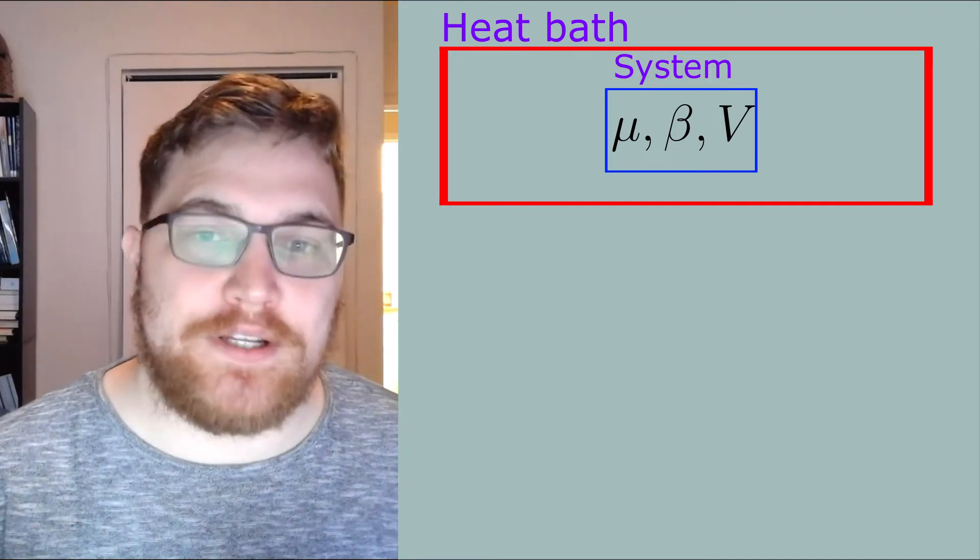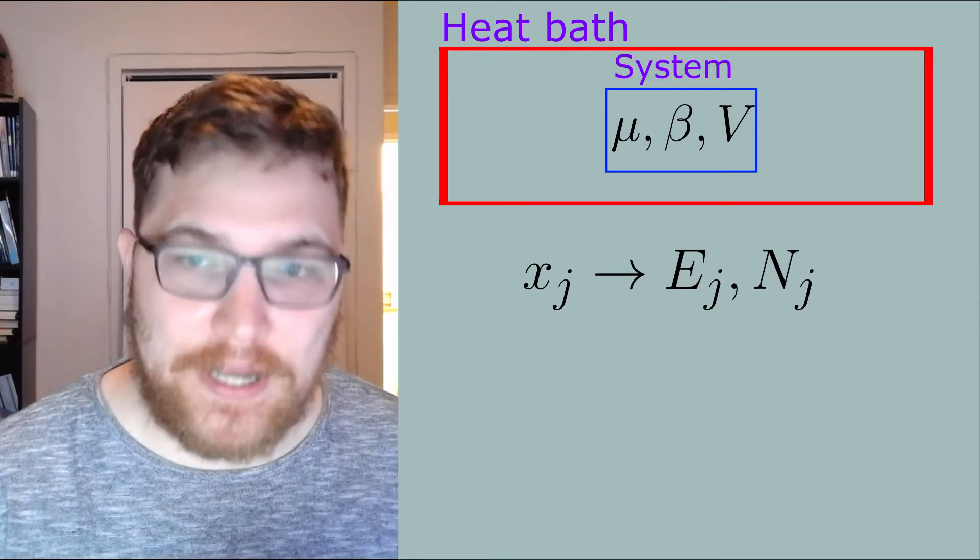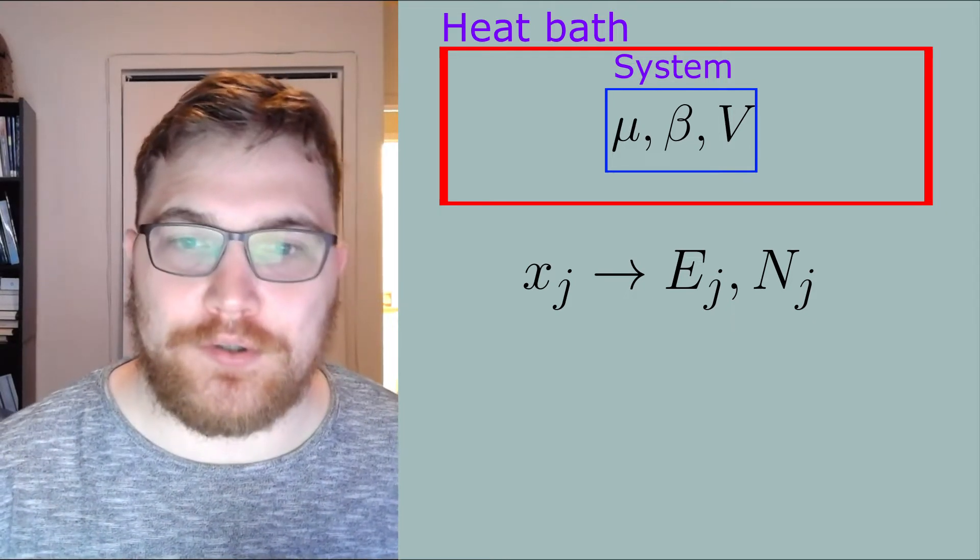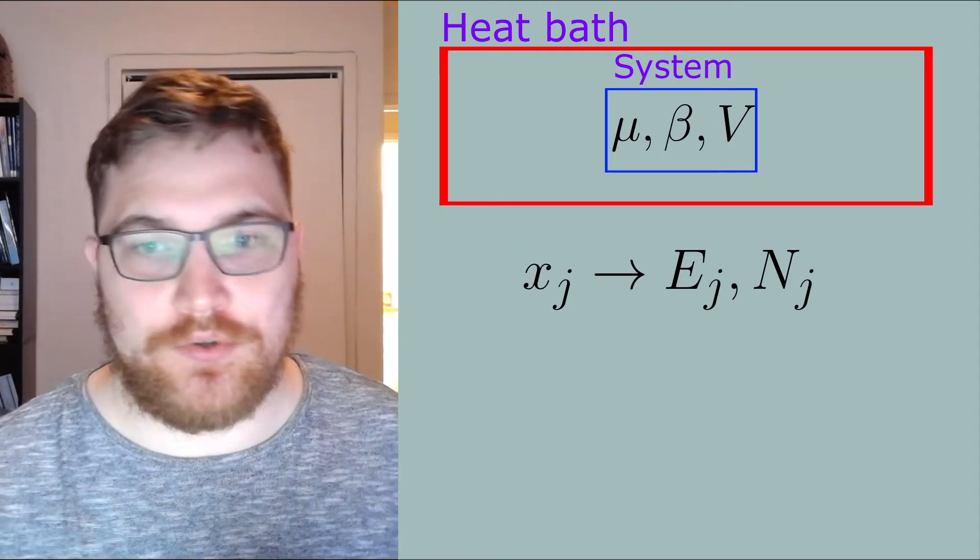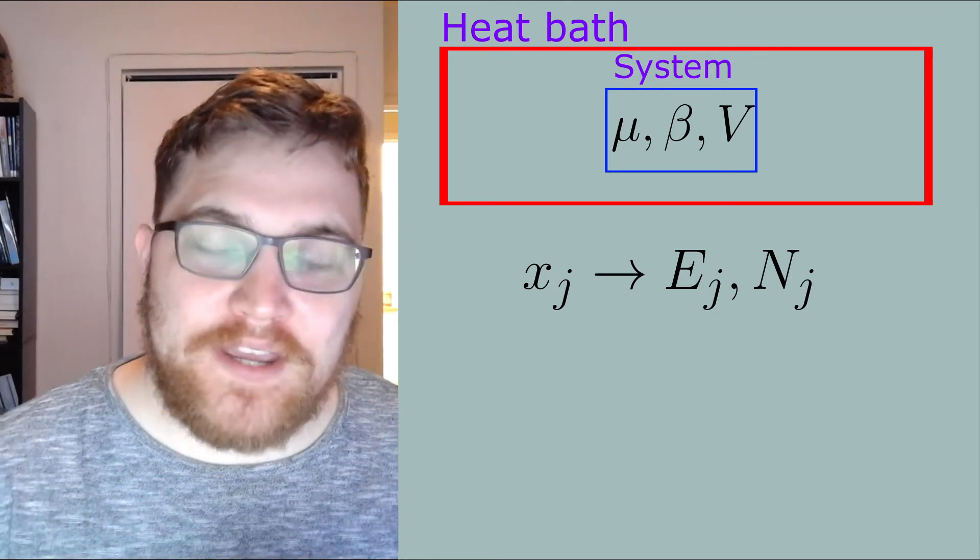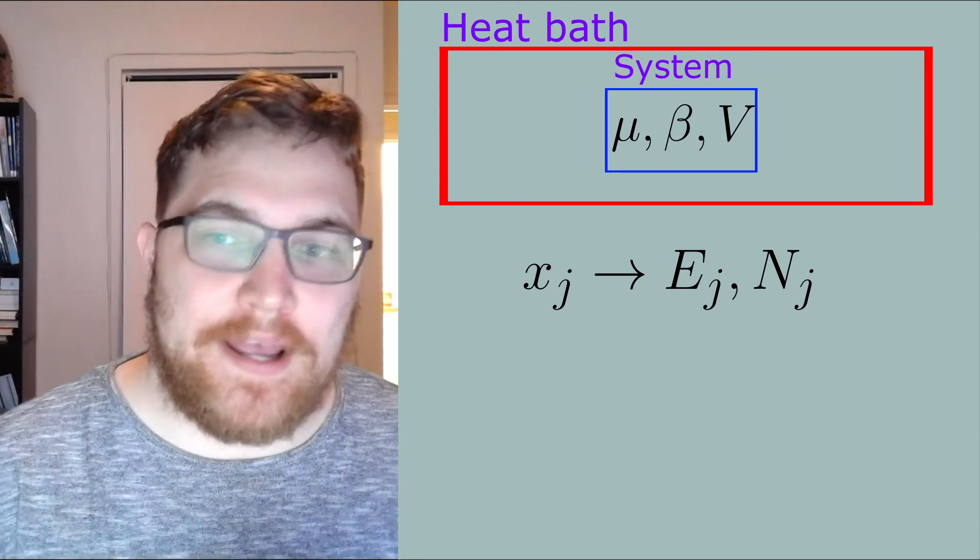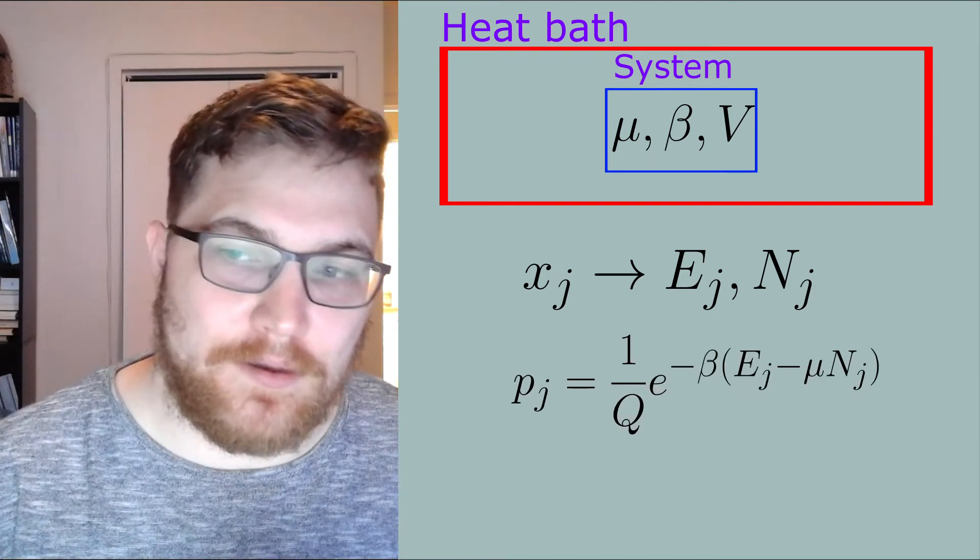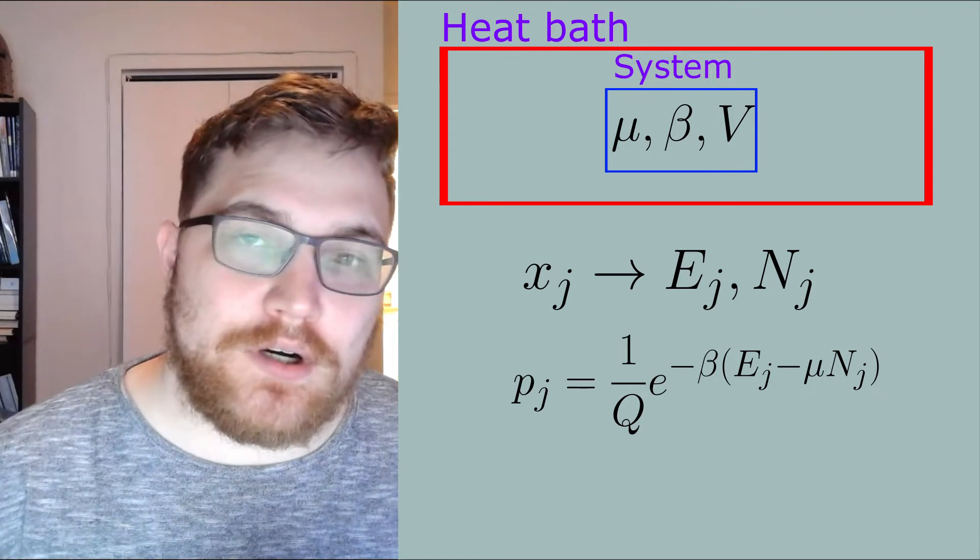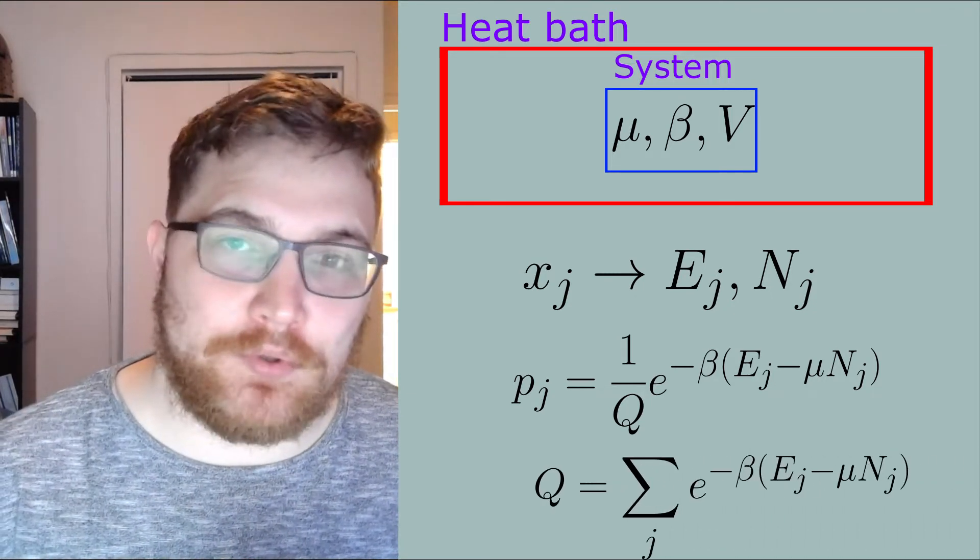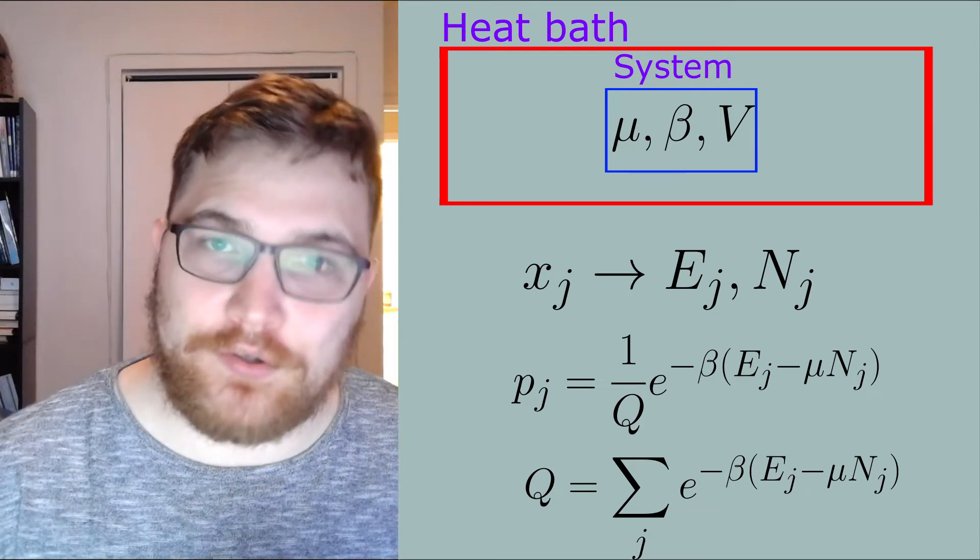To each microstate now we associate some particle number nj. We then assume our system has an average number of particles, but there are some fluctuations or variations in that number as time goes on. From here we get the probability distribution as written here in terms of the energies and the particle numbers. Q here is called the grand partition function and it's defined similarly to the regular partition function.